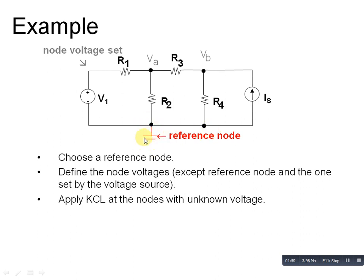Then next step: define the node voltages. Here we have V1, so we take V1 voltage. At this node we also have voltage, so we take voltage Va.